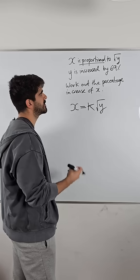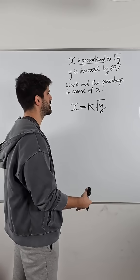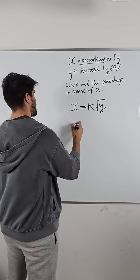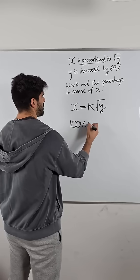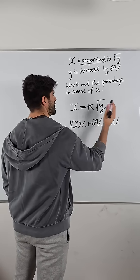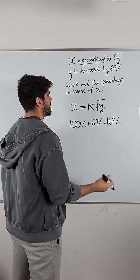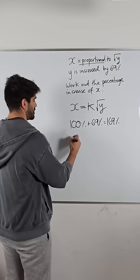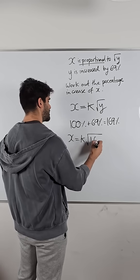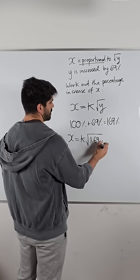y is increased by 69%. So what's the multiplier going to be? We're going to rewrite this with this being increased. Well, if you increase, you're increasing it from 100%, which is 169%, which the multiplier is then 1.69. So x is k root of 1.69y.